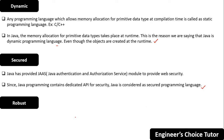The next buzzword is robust, which means strong. Java is called a robust programming language because of two key concepts: exception handling and garbage collection. Because of these two concepts, Java is considered a strong programming language.